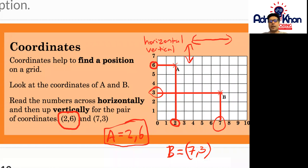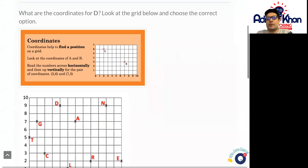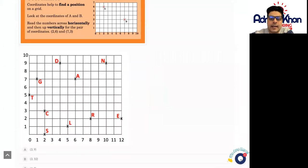Okay so you've got follow-up questions on this particular task. So the first question says what are the coordinates for D. Look at the grid below and choose the correct option. So D in this case we can see is just there.